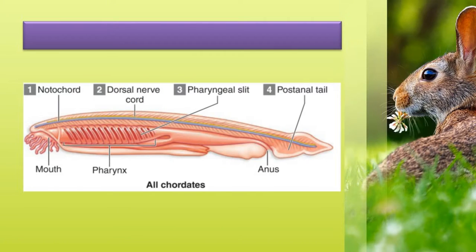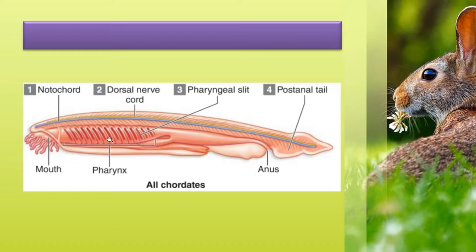The third feature is pharyngeal gill slits or clefts, present in the wall of the pharynx. They appear during the developmental stage of all chordates. In primitive aquatic forms, the pharyngeal gill slits are vascular and serve the purpose of respiration, acting as gills. In terrestrial or higher chordates, these gill slits appear in the embryonic stage and disappear later.